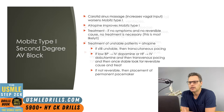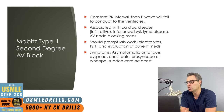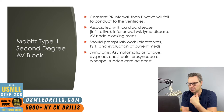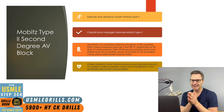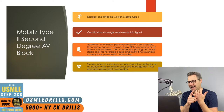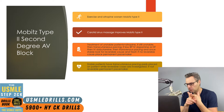Mobitz Type 2 occurs below the level of the AV node. The PR interval is constant and then a P wave simply fails to conduct to the ventricles. Symptoms include fatigue, dyspnea, chest pain, presyncope, syncope, and sudden cardiac death — in contrast to Mobitz Type 1 where patients are typically asymptomatic. Exercise and atropine worsen Mobitz Type 2, whereas carotid sinus massage improves it by slowing the sinus rate and allowing more time for excitability to recover at the block below the AV node.